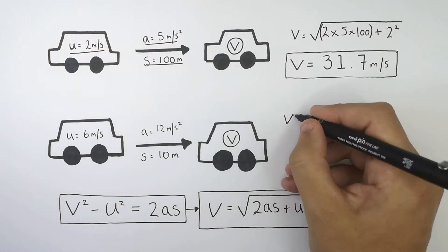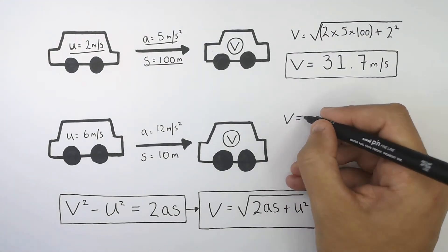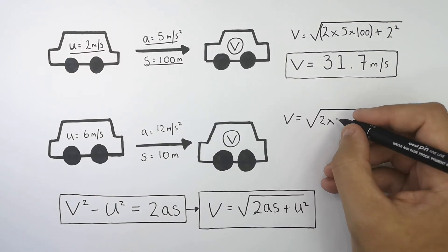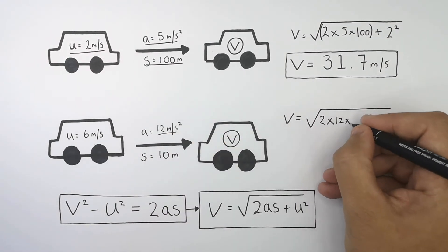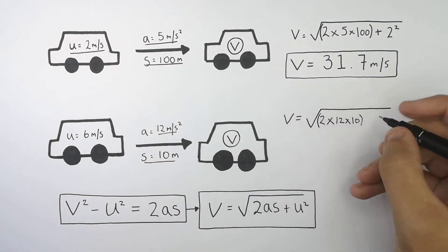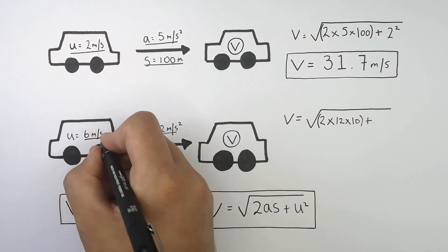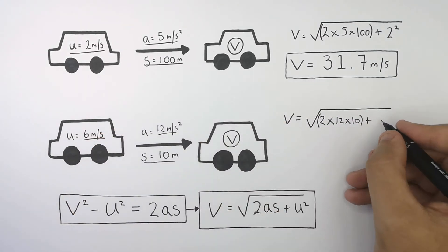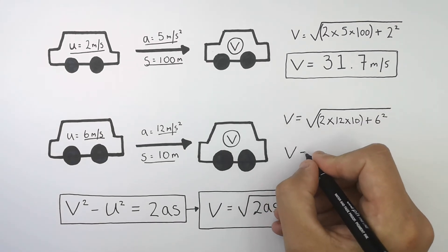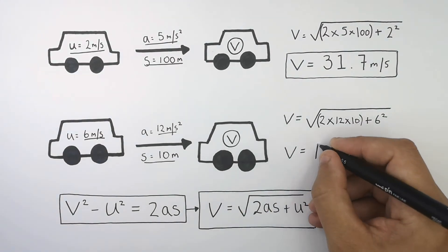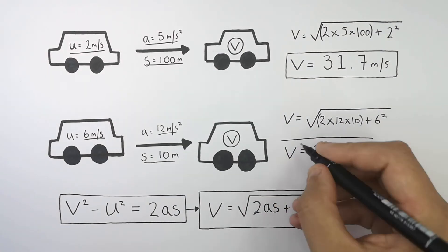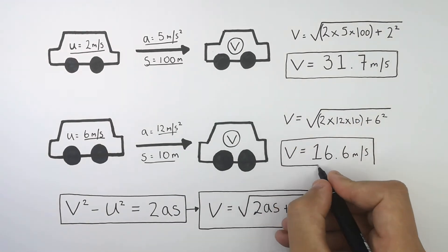To work out the final velocity of this car, you do the square root of 2 times the acceleration, which is 12 metres per second squared, times 10 metres for s, the displacement. You then add u squared, which is 6 squared. That gives you a final velocity of 16.6 metres per second.